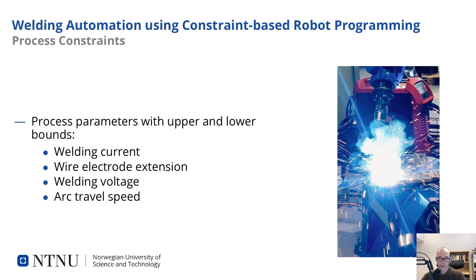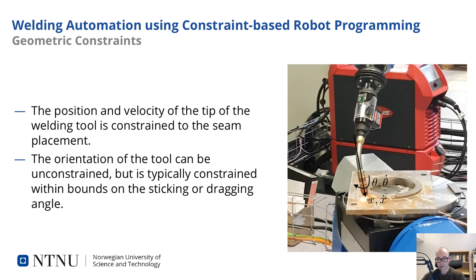A skilled welder adjusts several parameters during the welding process to ensure a stable final weld. These four primary process parameters are the welding current, the wire electrode extension, welding voltage, and the arc travel speed. All these four parameters have large ranges with upper and lower bounds within which the process can be controlled. In terms of geometric constraints, the welding process can be defined in terms of the position and orientation of the welding tool with respect to the workpiece. The position of the tip of the welding tool is constrained to be on the welding seam — that is, to ensure a good weld, the tool must be within the position tolerances of the welding process.